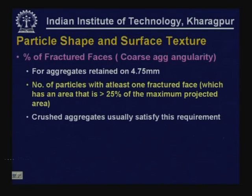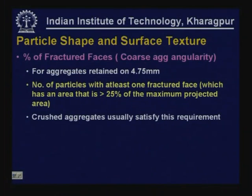Percentage of fractured faces, also called coarse aggregate angularity, is used for aggregates retained on 4.75 mm. This is the number of particles with at least one fractured face — identified as a face with area at least 25% of the maximum projected area. The count of aggregates with more than one or two fractured surfaces, expressed as a percentage of total, gives the coarse aggregate angularity.